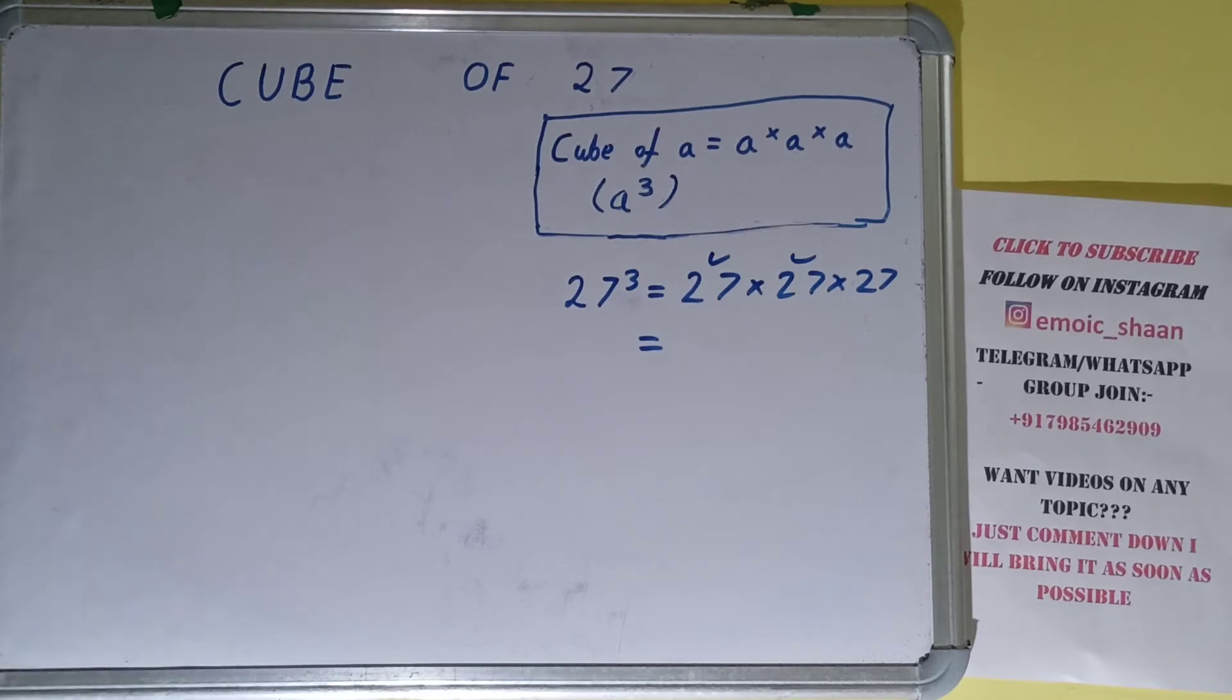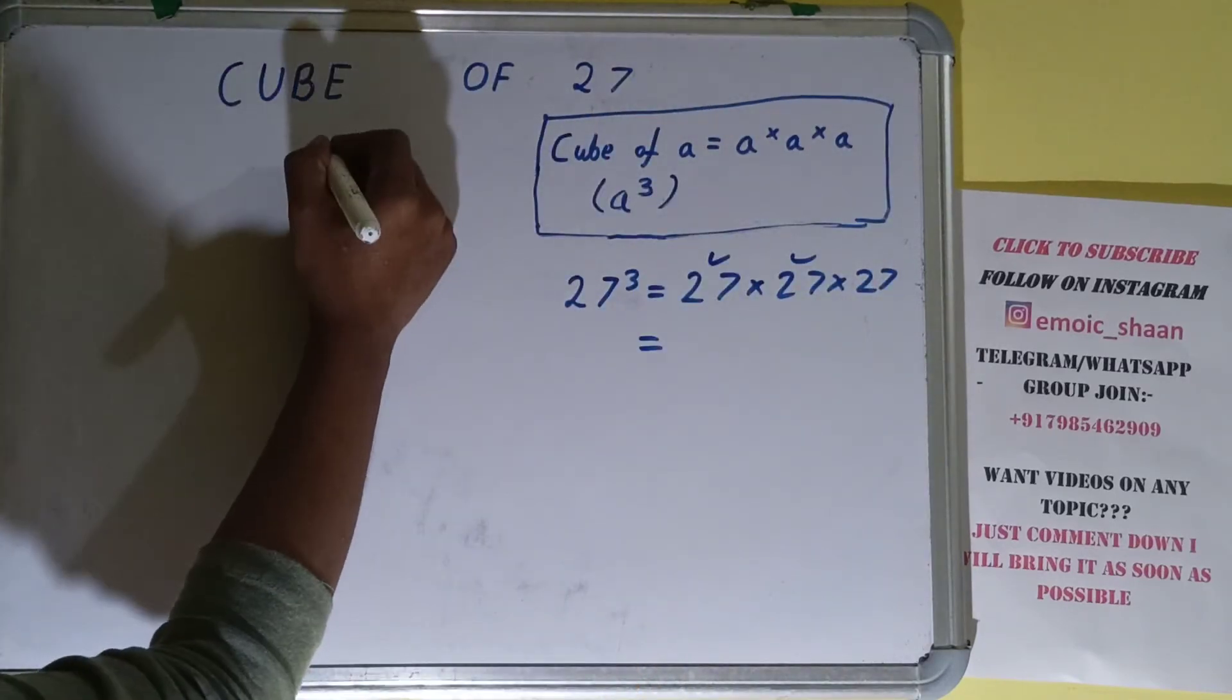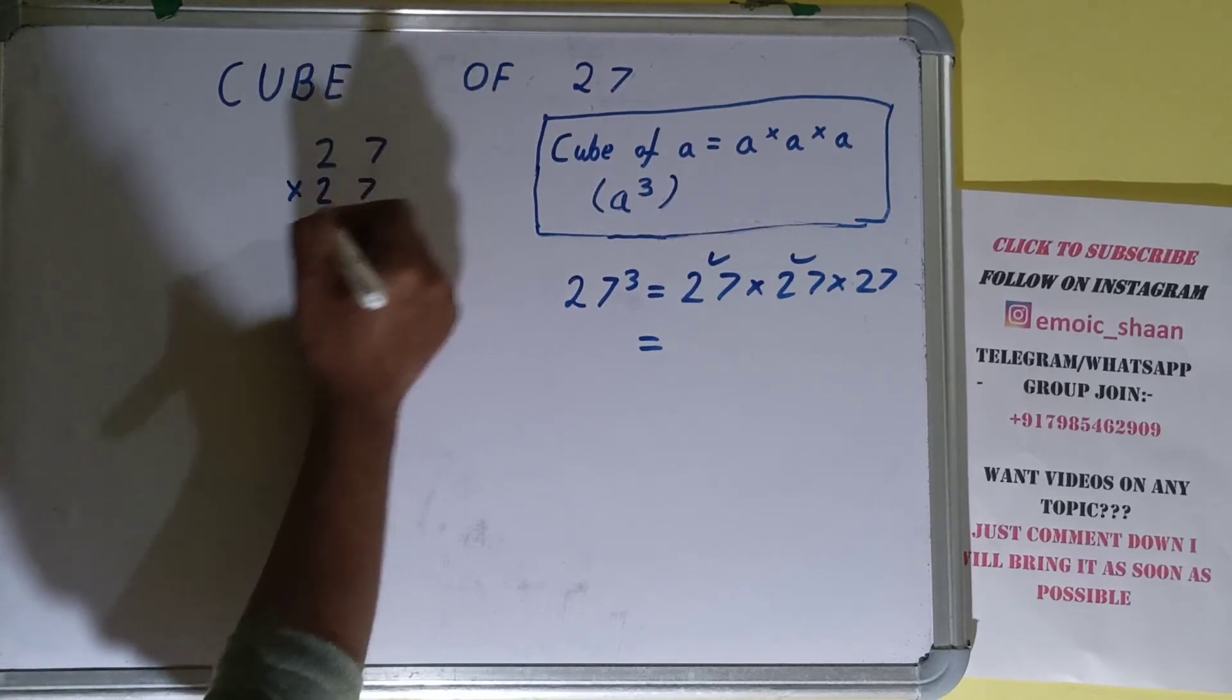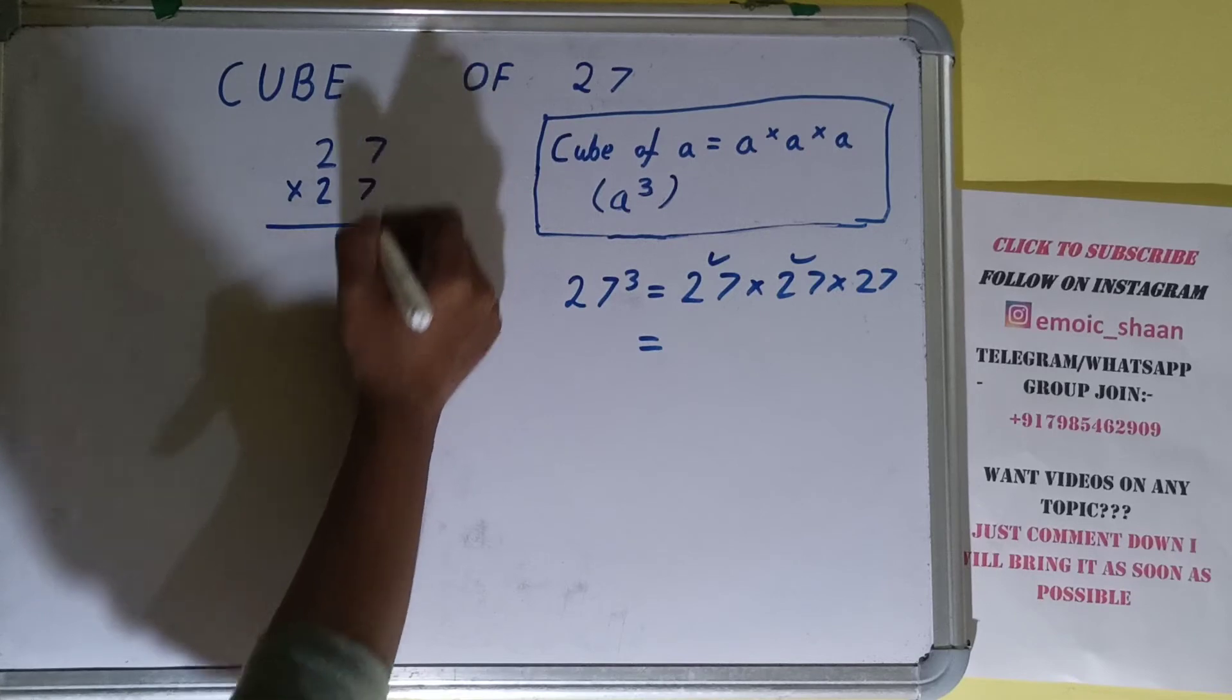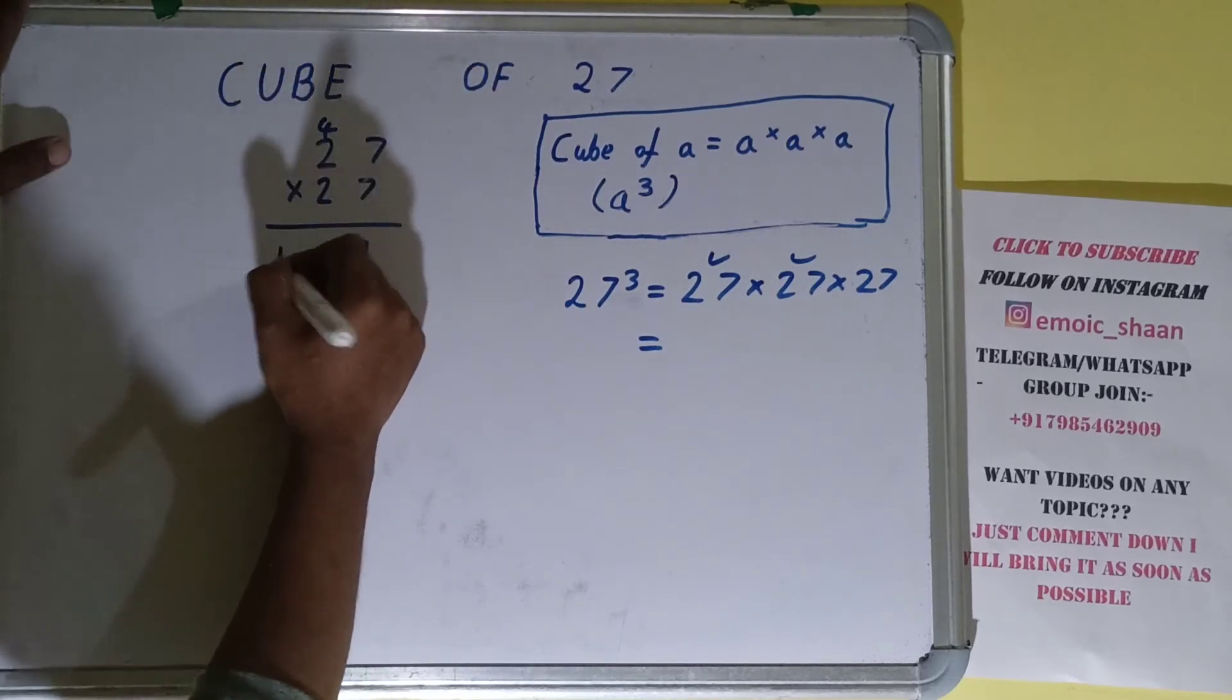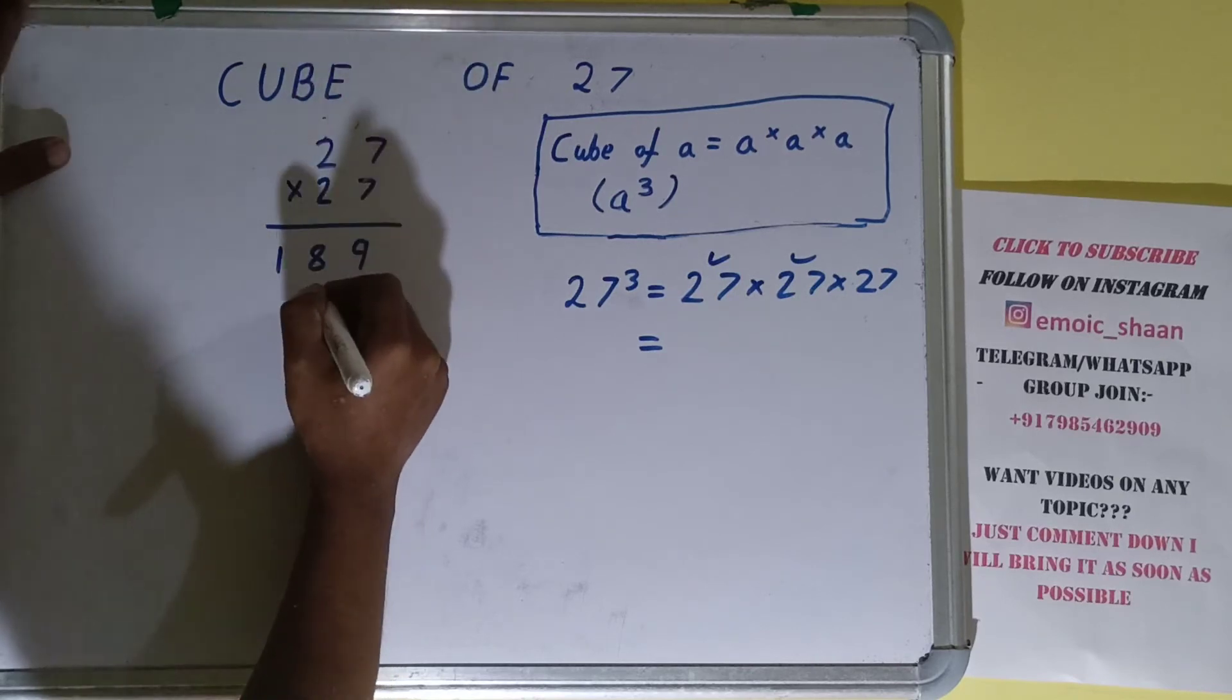So first, let's multiply this 27 into 27. 7 times 7 is 49, write 9, carry 4. 7 times 2 is 14 plus 4 is 18. Now this one - 7 times 2 is 14, write 4, carry 1. 2 times 2 is 4 plus 1 is 5.